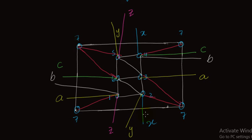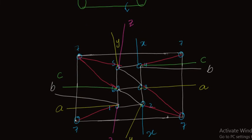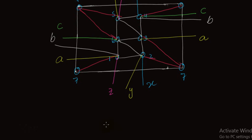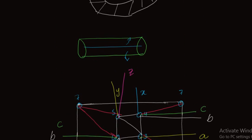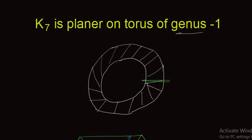Now you can see that all the vertices are connected with each other, and this is only possible when we draw K7 on torus of genus 1. Remember, this plane is a modified form of torus of genus 1 — when we roll this lower edge to join the upper edge, and the left edge meets the right edge, we will again get torus of genus 1. So K7 can be drawn on torus of genus 1. I also have videos on K6 and K5 — you can find the links in the description. Thank you very much for watching this video lecture.